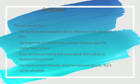We can conclude that liquid junction potential is due to the difference in the velocity of ions. The magnitude of liquid junction potential depends upon the relative speeds of ions. If two ions are moving with the same speed, there will be no liquid junction potential. The liquid junction potential cannot be measured directly but it can be calculated, and the determination and calculation will be done in the next lecture.